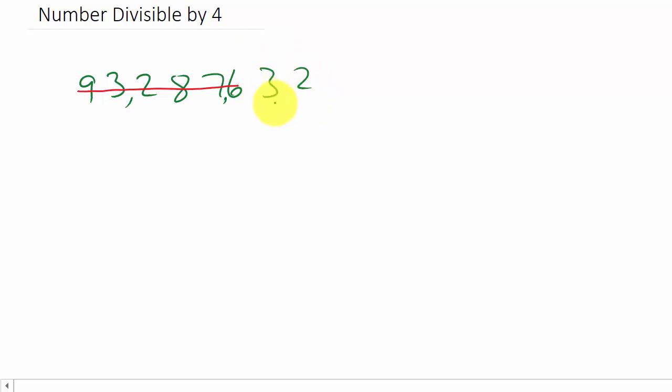Okay, so does 4 divide into the last two digits evenly? Well, let's see, 32 divided by 4, that would give us 8. So 4 divides into the last two digits evenly, so that means the entire number